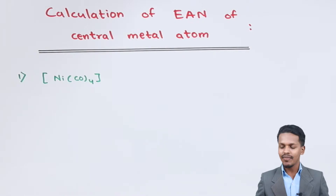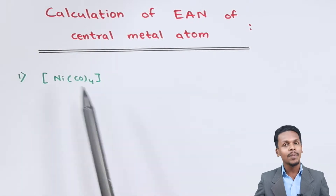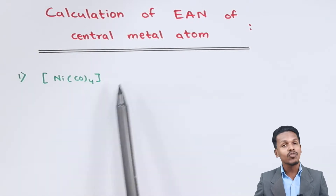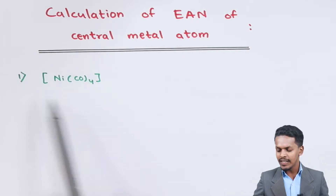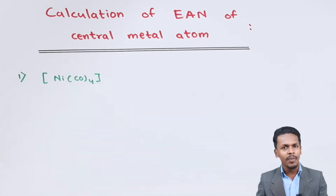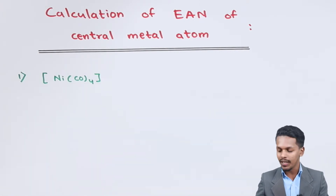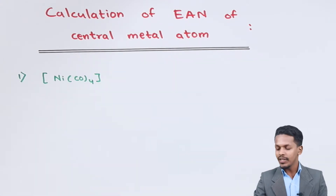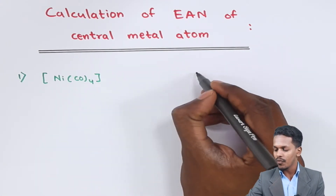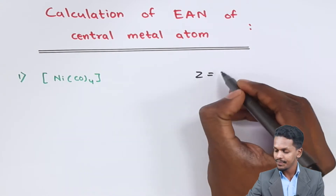For the first example, we have a neutral complex, and we will calculate the Effective Atomic Number for nickel. The atomic number of nickel is 28, so the value of Z is 28.